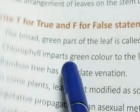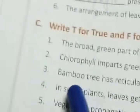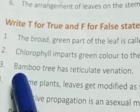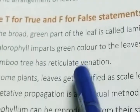Next, true or false: the broad green part of the leaf is called lamina — answer will be true. Chlorophyll imparts green color to the leaves — answer will be true. Bamboo tree has reticulate venation — answer will be false.